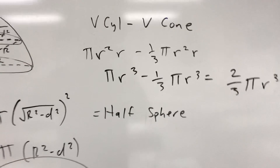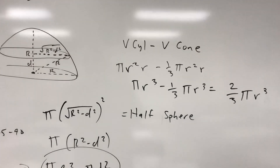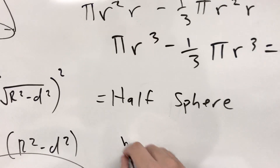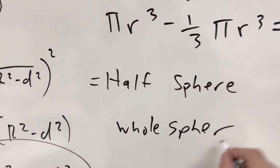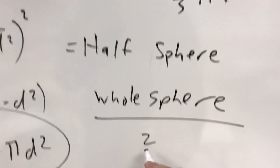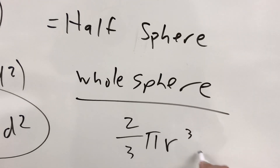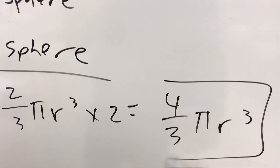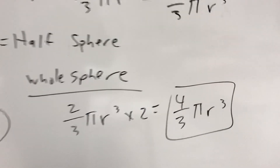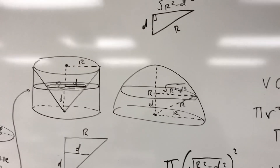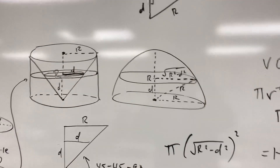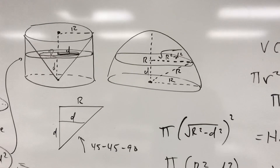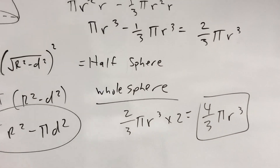So notice, the volume of that half sphere is 2/3 π r³. If I want to find the volume of the whole sphere, I can just take that 2/3 π r³ and double it, and I get 4/3 π r³. I have no idea how somebody figured out that the volume of a sphere is twice the volume of subtracting a cone out of a cylinder, but that's a nice little proof that shows it using Cavalieri's principle. Thank you.